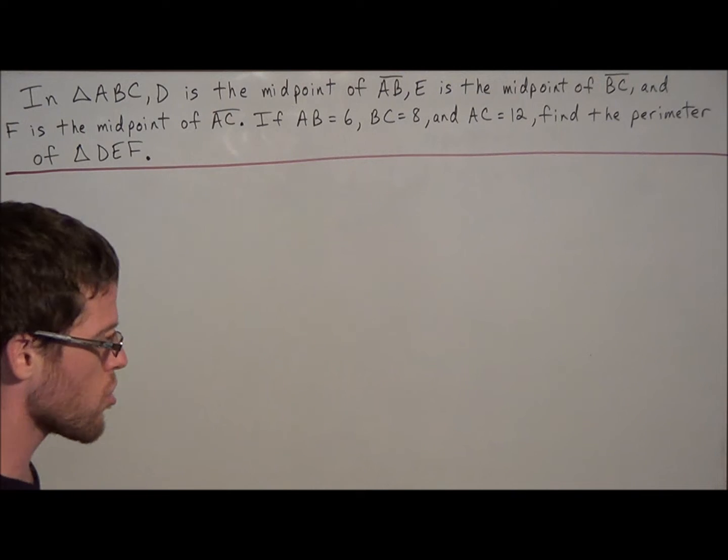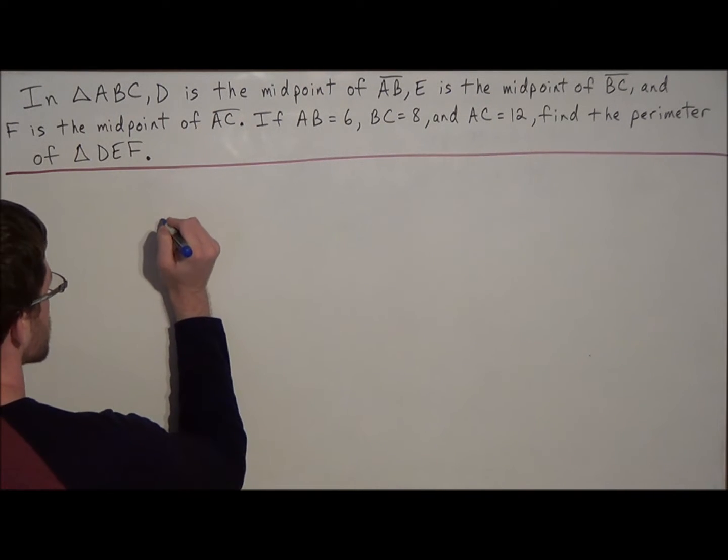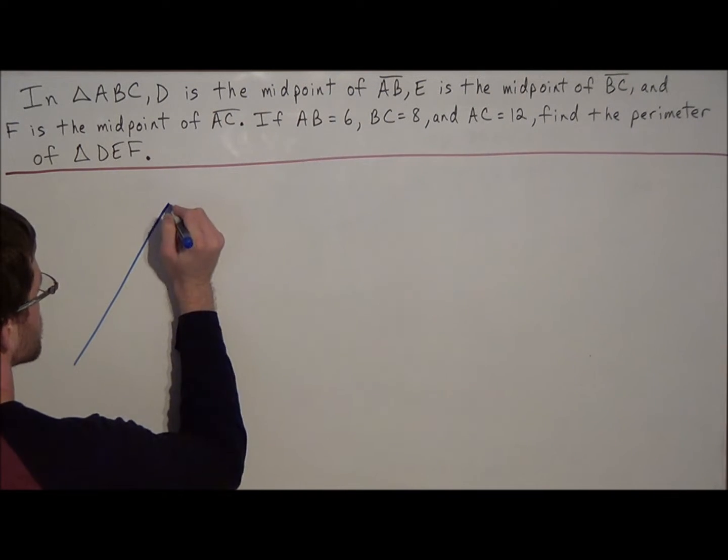So the first thing we should do is just draw everything that was given to us. So we're starting off with triangle ABC.